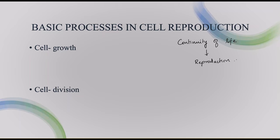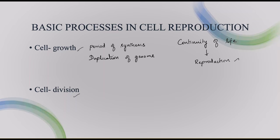How does reproduction involve? With the help of two basic processes. The first thing is cell growth and then cell division. In cell growth, it is mainly a period of synthesis — synthesis of various proteins and chemicals used for the development and function of a cell. The next thing is duplication of genome and also various components of the cell. Genome is nothing but the complete genetic material in an organism. So if this has happened, a cell will undergo growth, and then cell division is going to happen.